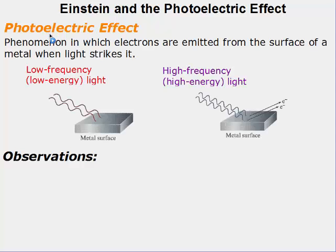The photoelectric effect is the phenomenon in which electrons are emitted from the surface of a metal when light strikes it. If it's a low energy light, then when it hits the metal, nothing happens. But when it's a high frequency light, when that energy hits it, electrons come off.